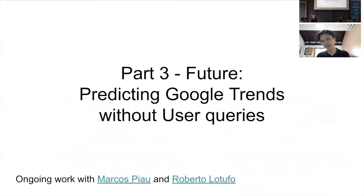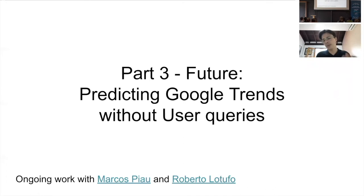In the third part, back to a positive mood. This is a new application I'm quite excited about — it gives hints of what we can do with these models now that we have quite good hammers. In particular, this application can predict Google Trends. Google Trends is a web interface that aggregates user queries over time, showing the most popular search terms. In this application we don't need to rely on user queries at all.